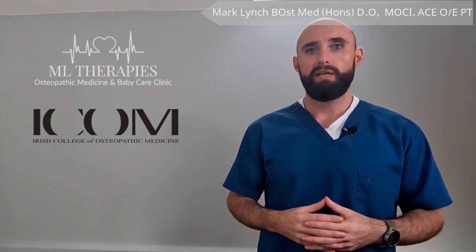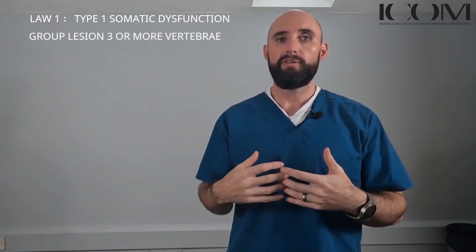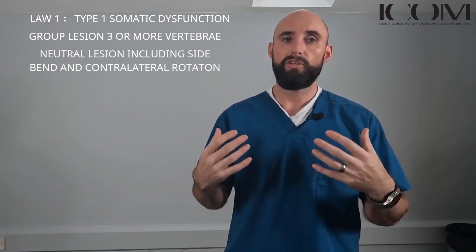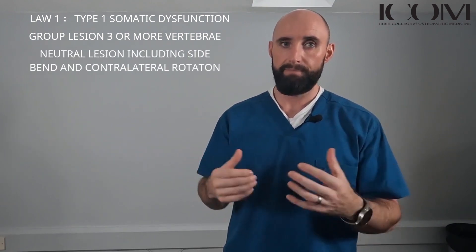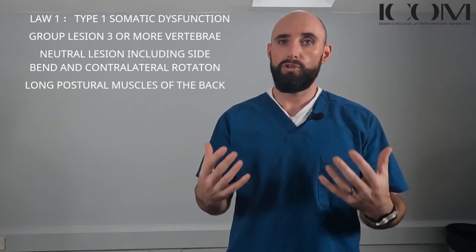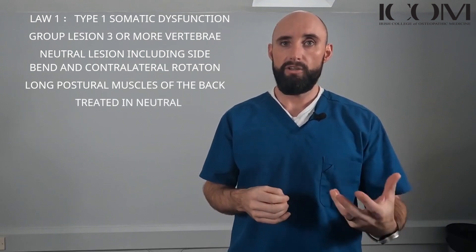We have three laws of spinal motion in Fryette's. In this video we're just going to talk about Type 1 somatic dysfunction. Type 1 involves a group of three or more vertebral segments, and when side bending is introduced, rotation occurs to the opposite side. It's maintained by long postural muscles and we treat it in neutral. This is generally a postural issue.